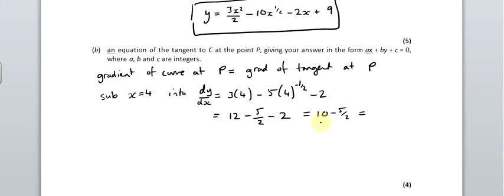And 10 minus 5 over 2 is 7.5. So 10 is 20 over 2, isn't it? So 20 over 2 minus 5 over 2 is 15 over 2. That's our gradient.